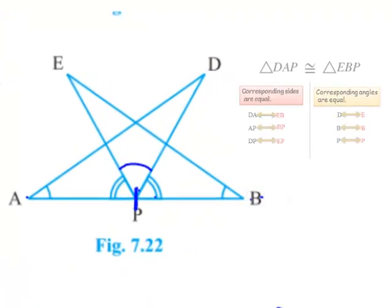When two triangles are congruent, their corresponding sides are equal. Therefore, we can say that AD is equal to BE.